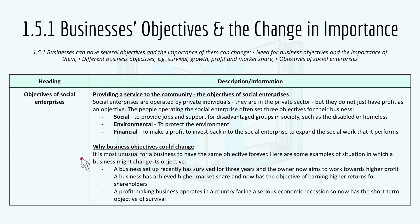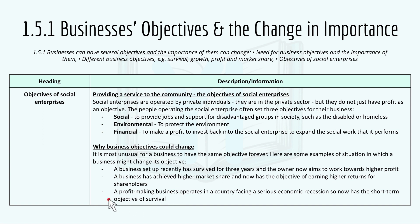Here's why business objectives could change. It is most unusual for a business to have the same objective forever. Examples of situations in which a business might change its objective: first, a business set up recently has survived for three years and the owner now aims for higher profit. Second, a business has achieved higher market share and now has the objective of earning higher returns for shareholders. Third, a profit-making business operates in a country facing a serious economic recession and now has the short-term objective of survival.